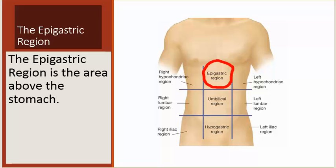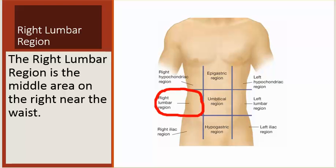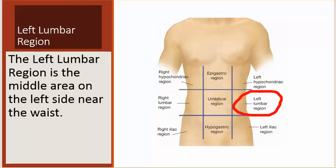The epigastric region is the area above the stomach. The right lumbar region is the middle area on the right near the waist. The left lumbar region is the middle area on the left near the waist.